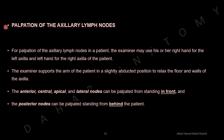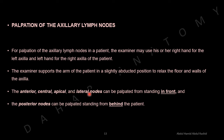Palpation of the axillary lymph nodes. For palpation of the axillary lymph nodes in a patient, the examiner uses the right hand for the left axilla and the left hand for the right axilla. The examiner supports the patient's arm in a slightly abducted position to relax the walls of the axilla. The anterior, central, apical, and lateral nodes can be palpated from in front, and the posterior nodes can be palpated from behind the patient.